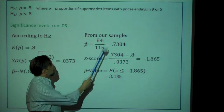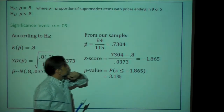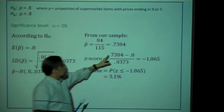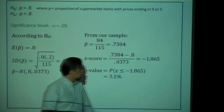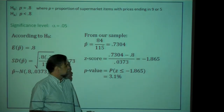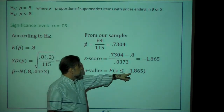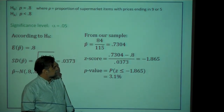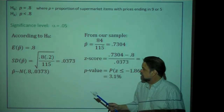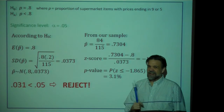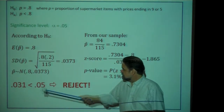From our sample we got 84 items with prices ending in 9 or 5, which is 73%. The z-score for that is our observed value minus the mean divided by the standard deviation, giving us negative 1.865. The P-value — the probability that z would be as low as negative 1.865 or even lower — is 3.1%. My alpha was 5%, so that means reject!